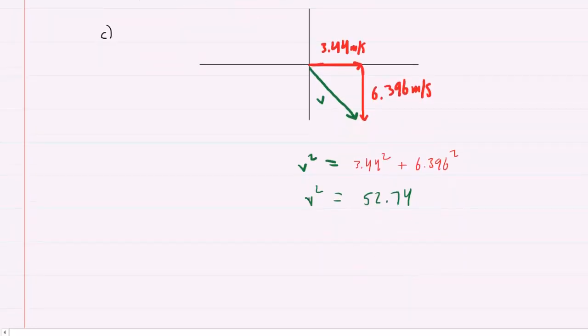And then, of course, to solve for v, I'll just go ahead and take the square root on both sides. So v will turn out to be 7.26 meters per second. So this would be the magnitude of the velocity and the correct answer to part c.